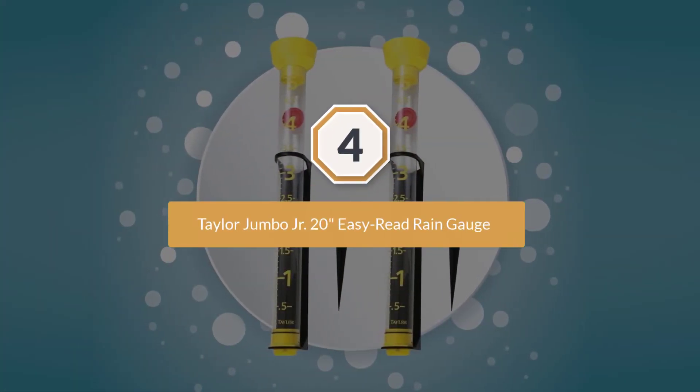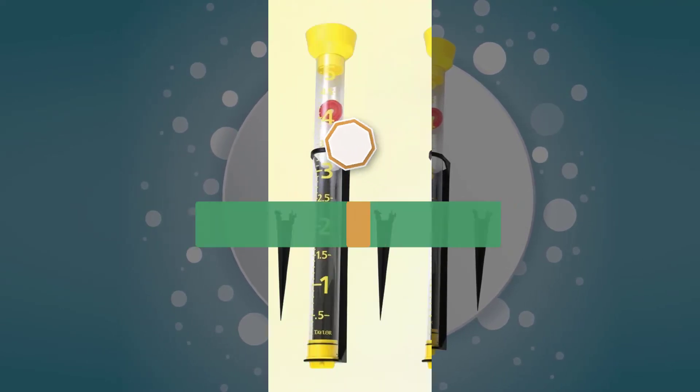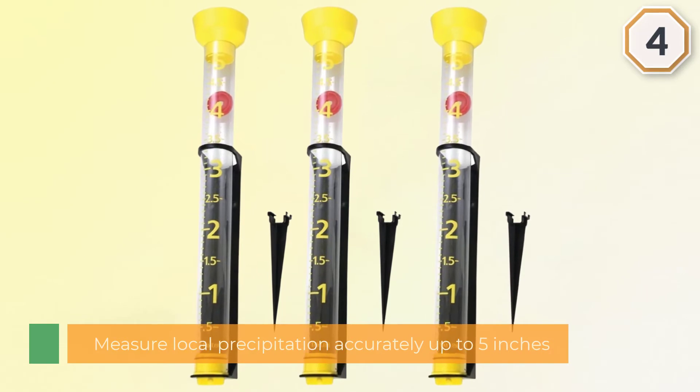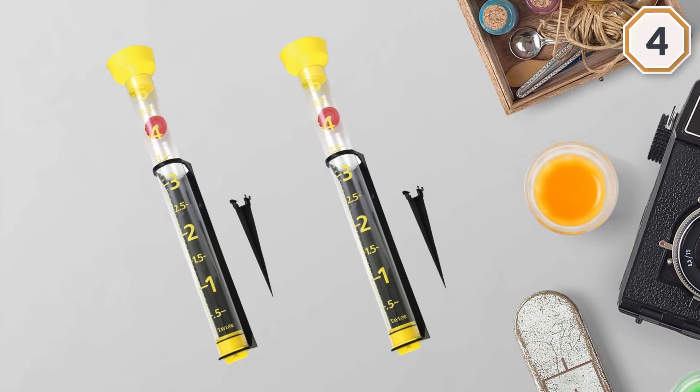Number four: Taylor Jumbo Jr. 20-inch Easy Read Rain Gauge. You can measure local precipitation accurately up to 5 inches. It is large and has a wider opening for the rain to easily get in to be measured.